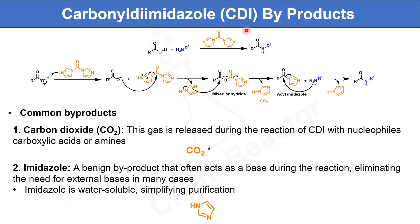To better understand CDI byproducts, first we look into the reaction mechanism. I have taken amide bond formation as an example. CDI deprotonates the carboxylic acid into a carboxylate anion. This carboxylate anion then adds to the protonated CDI, forming a mixed anhydride. In the next step, the released imidazole reacts with this mixed anhydride and forms an acyl imidazole intermediate. At the same time, this releases imidazole as well as carbon dioxide as byproducts. Finally, an amine adds to this acyl imidazole intermediate, forming the amide product and releasing another imidazole molecule.